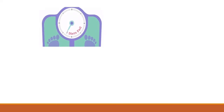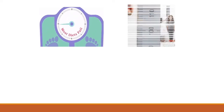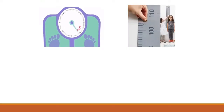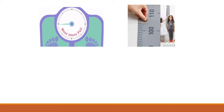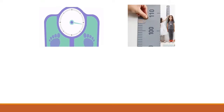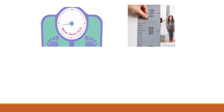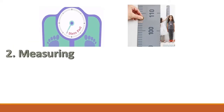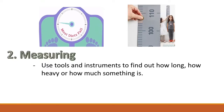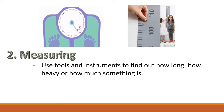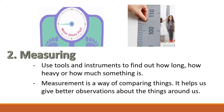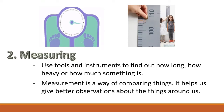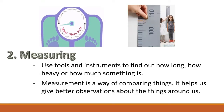People often complain about their weight when they step on a weighing scale. Parents tell their children how tall they have grown after measuring them with a meter stick or tape measure. In science, exact observations about height, length, and weight are gathered by measurement. Measuring uses tools and instruments to find out how long, how heavy, or how much something is. Measurement is a way of comparing things — it helps us give better observations about the things around us. You can gather quantitative observations about a material using measuring tools.